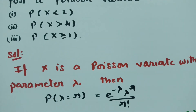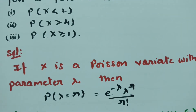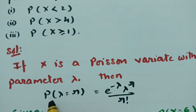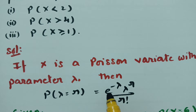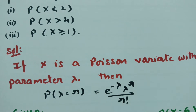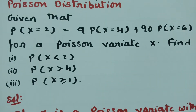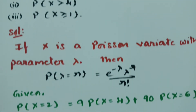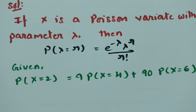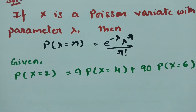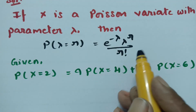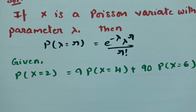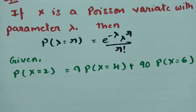If x is a Poisson variate with parameter lambda, then according to the Poisson distribution, the formula is: probability of x equals r is equal to e to the power minus lambda, times lambda to the power r, divided by r factorial. From the question, probability of x equals 2 is equal to 9 times probability of x equals 4 plus 90 times probability of x equals 6. We need to find the value of lambda.